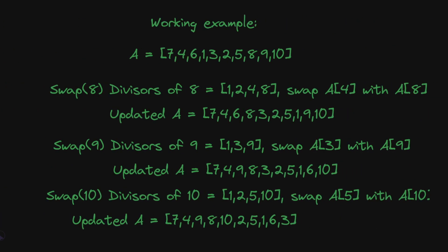Now things get tricky when we call swap 8. The divisors of 8 are 1, 2, 4, 8. The largest one which is less than 8 is 4. So we swap a4 with a8. The 8 gets swapped with 1 because 1 is at index 4. Our updated array becomes 7, 4, 6, 8, 3, 2, 5, 1, 9, 10. Now 1 has moved from index 4 to 8.